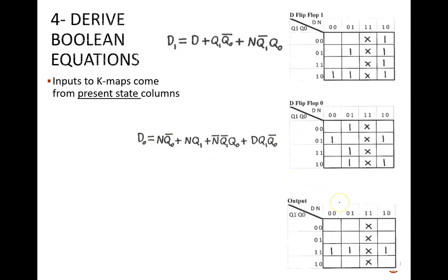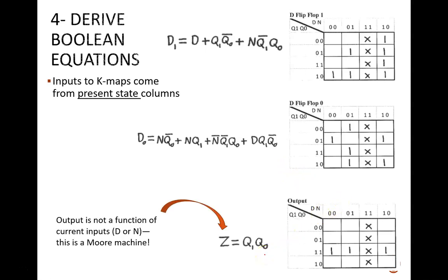Finally, here is the K-map and equation for the output Z. There is a critical fact about this equation. It does not include the inputs D or N. Again, this is the definition of a Moore machine. The output signal is a function only of the present state, and not of the present inputs.